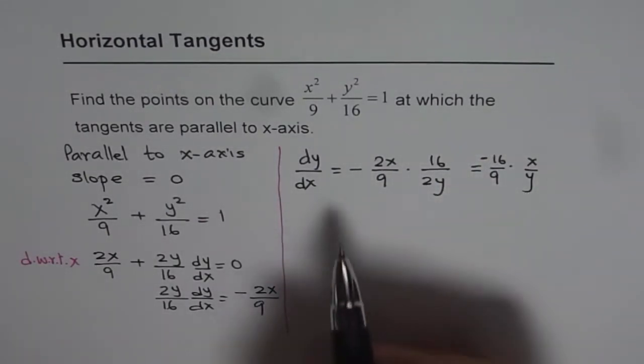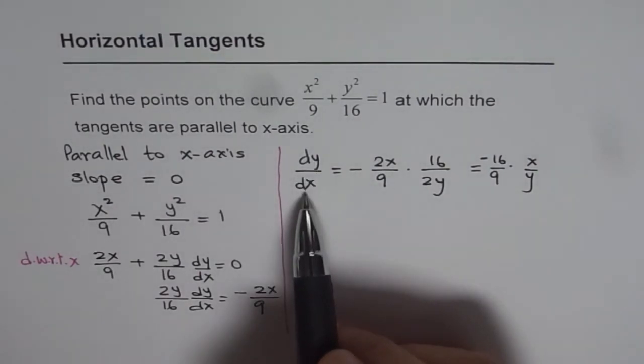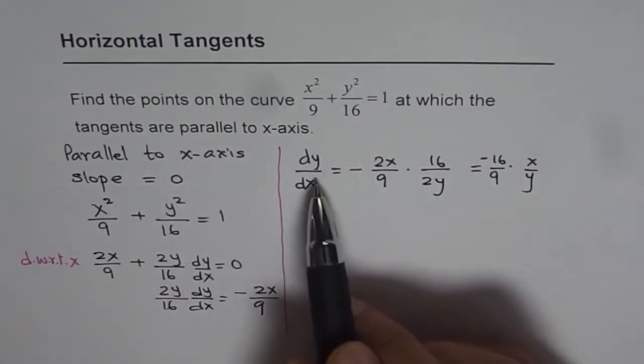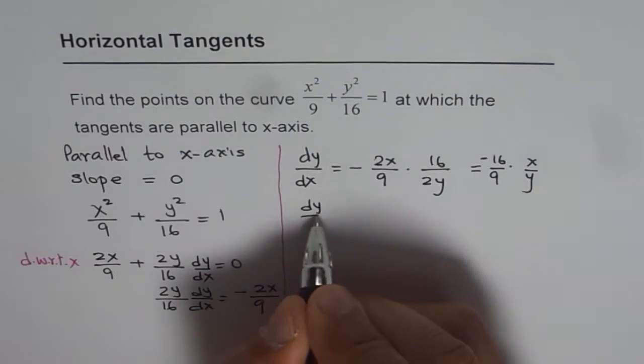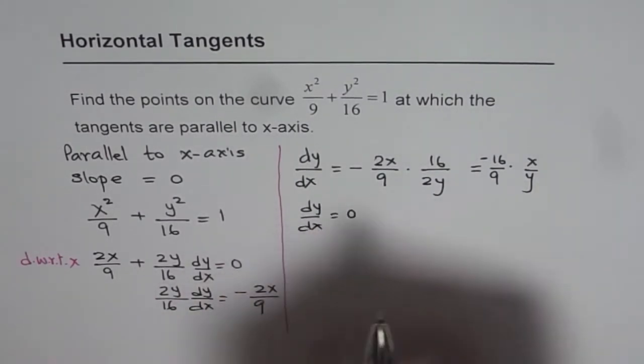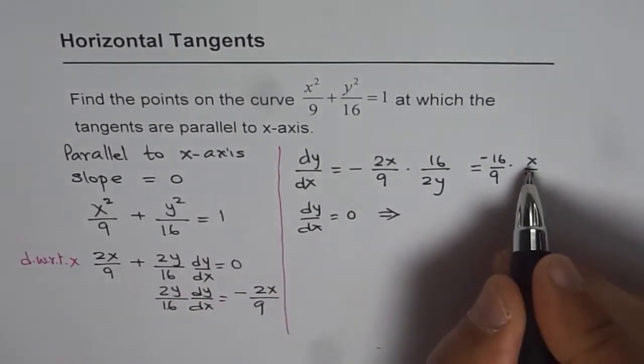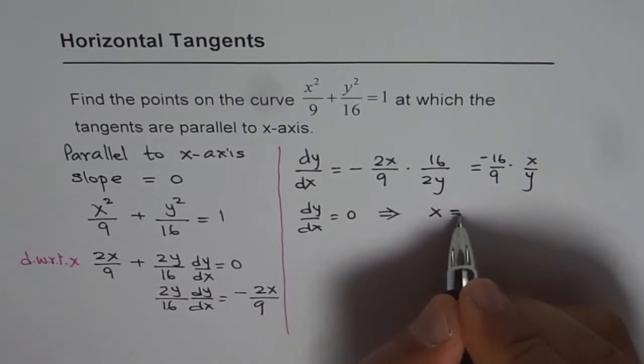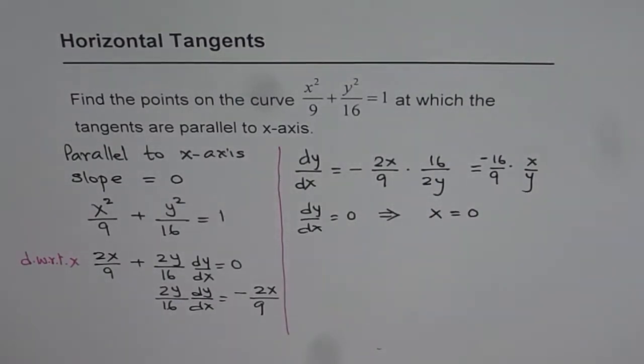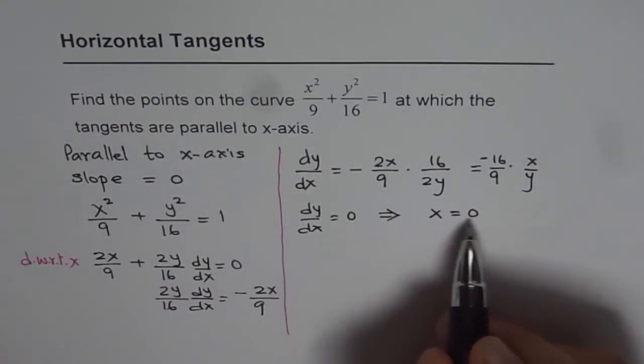Now we need to find points where dy/dx is 0. So dy/dx will be 0 if dy/dx = 0, which implies that x = 0. That means x = 0.